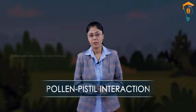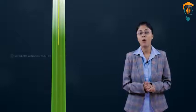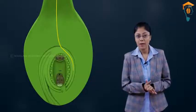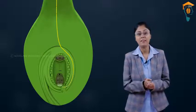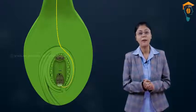So students, we have discussed the pollen-pistil interaction and we have seen that the pollen tube enters the ovary and ultimately it enters the ovule, and then it enters the embryo sac through the micropylar end.